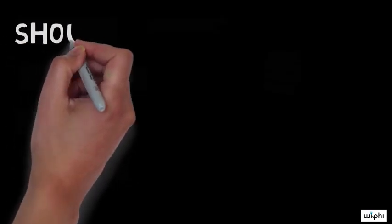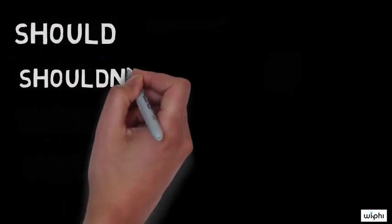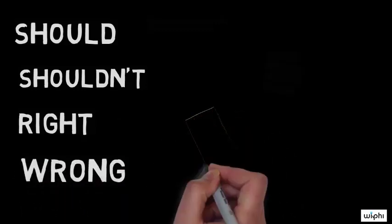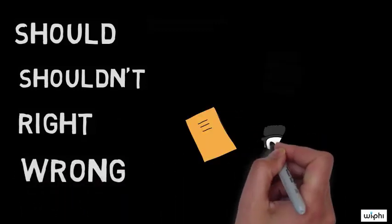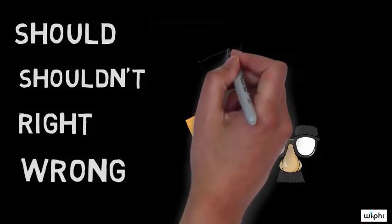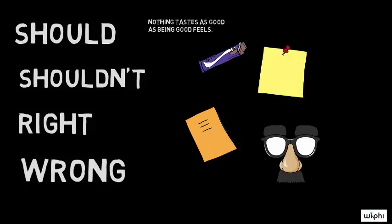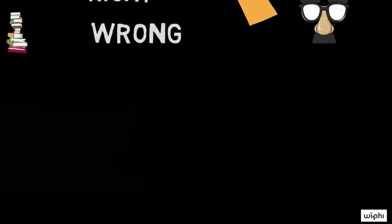Normative claims also include words like should or shouldn't or right and wrong. For example, you should do your homework. You shouldn't pick your nose. It's not okay to steal a candy bar. Sending a thank you note is the right thing to do. These are also normative claims.